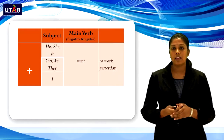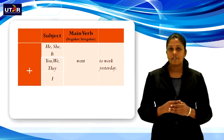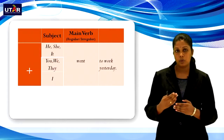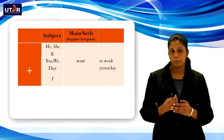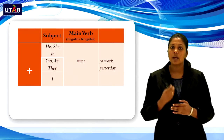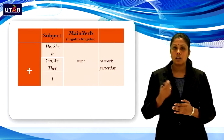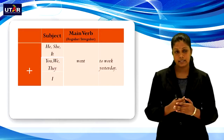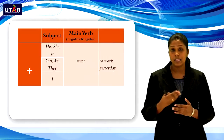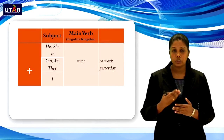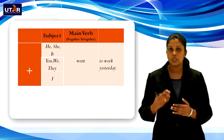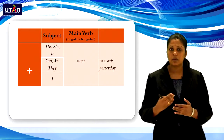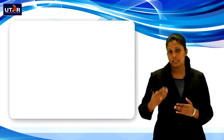Now let's look at the other subjects. We have singular subjects: he, she, it. And then plural subjects: you, we, they. And we have I. For all subjects, we use the past form of the verb. For example, went is the past form of go. So: he/she/it went to work yesterday; you/we/they went to work yesterday; and I went to work yesterday. All these sentences are affirmative sentences.